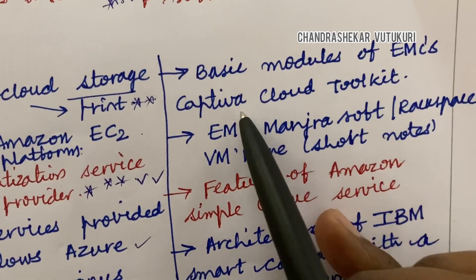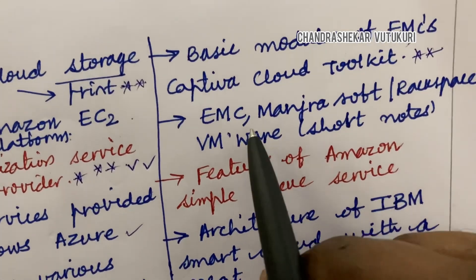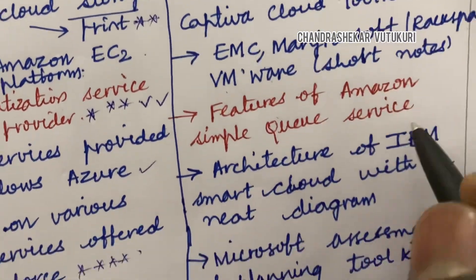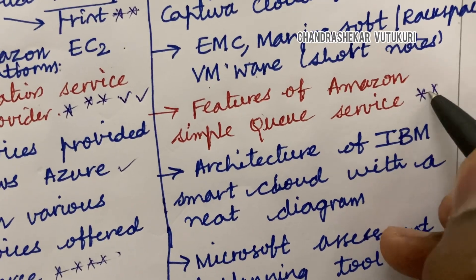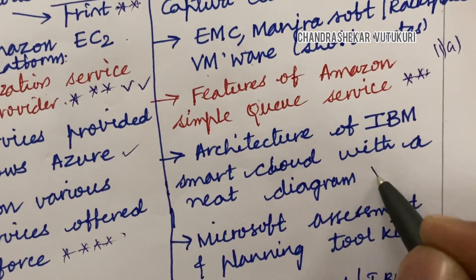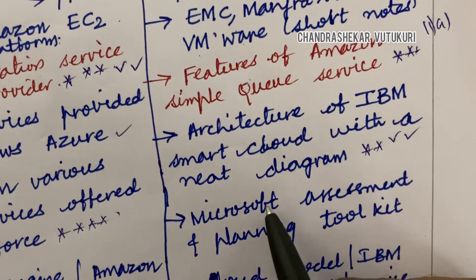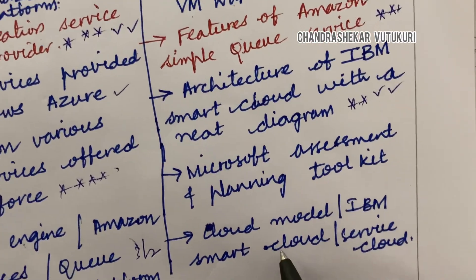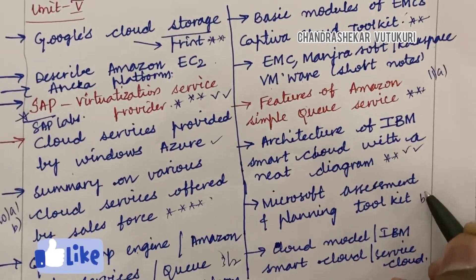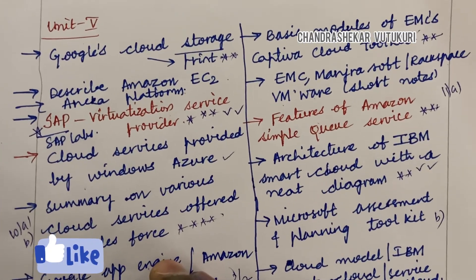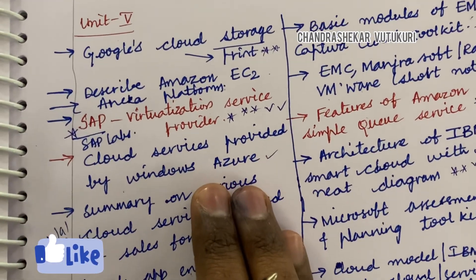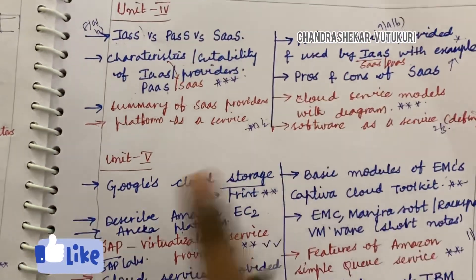Basic modules of EMC and the Captiva cloud toolkit is said to be a 3 mark question. You are supposed to define terms like Rackspace, VMware, and write short notes. Features of Amazon Simple Queue Service is also said to be an 11A question in the question paper. Architecture of IBM SmartCloud with a neat diagram is a very important question. Microsoft Assessment and Planning Toolkit, IBM SmartCloud, and Service Cloud are also important. Work out all these topics — you are going to get 15 out of 15 marks from Unit 5.